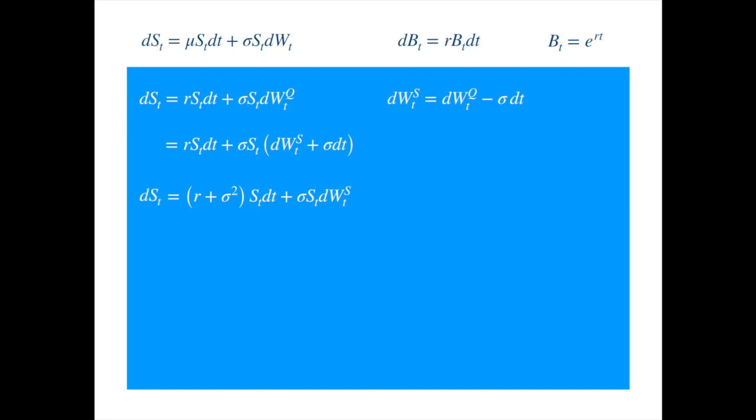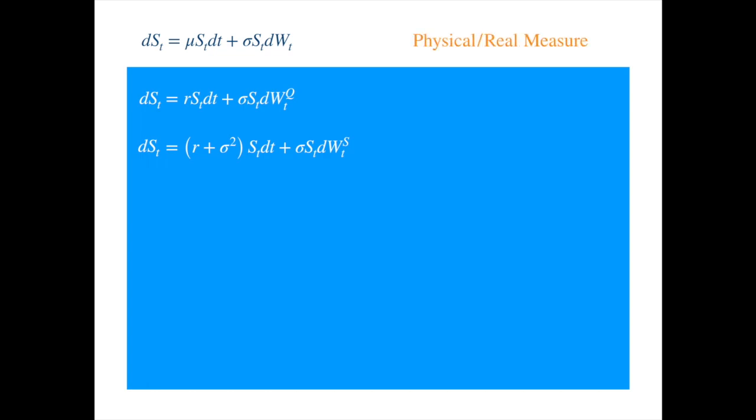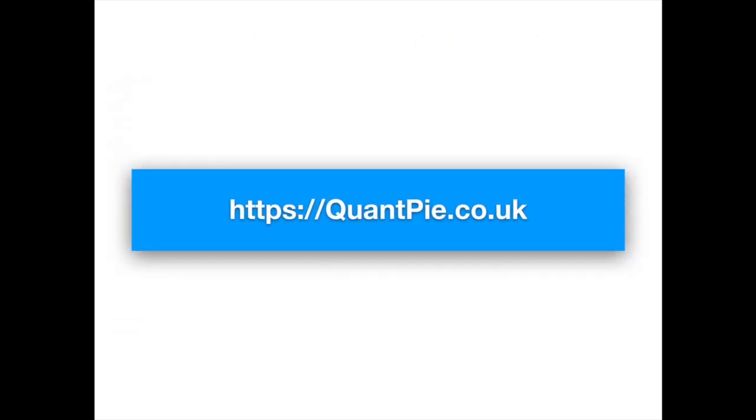So, to summarise, under the original measure, the drift of the stock price SDE is equal to mu. If we use the risk-neutral measure, then the drift is equal to R. And if we use the probability measure induced by the stock price, then the drift is equal to R plus sigma squared. We hope you enjoyed the video, and we look forward to seeing you in the next.